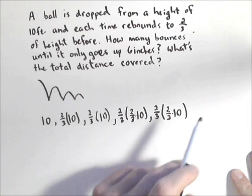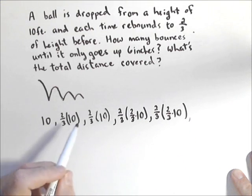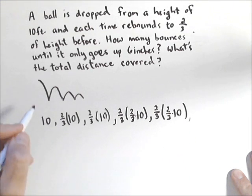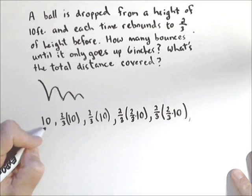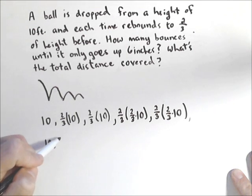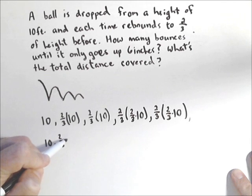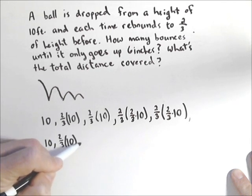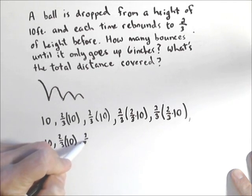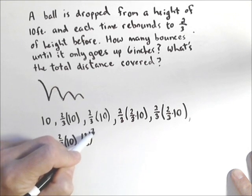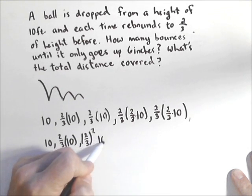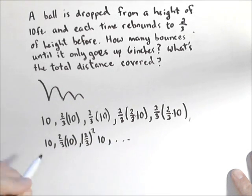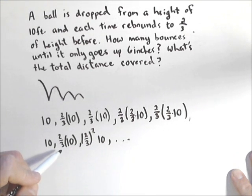And so what you can see is we actually have a geometric sequence. So the height on the first bounce is 10, second bounce is two-thirds times 10, third bounce is two-thirds squared times 10, and so on. So we have a common ratio of two-thirds.